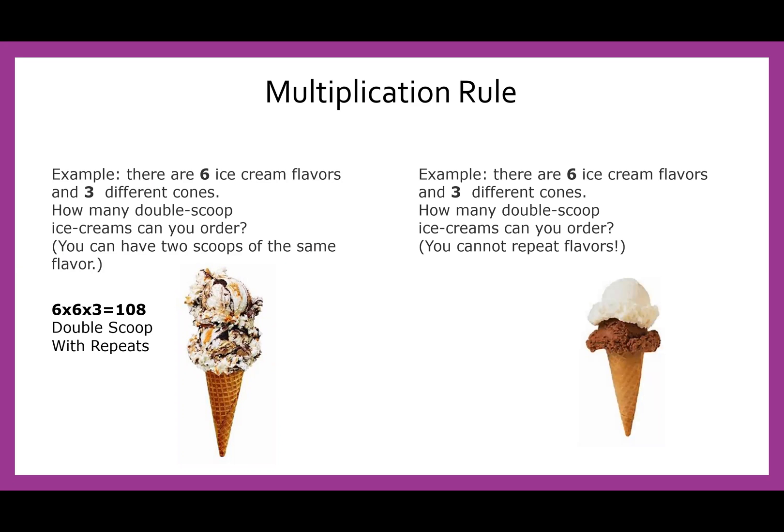Now, if I say, okay, I can do double scoop, but I can't have repeat flavors, what happens is we have six options for the first scoop, but now on the second scoop, we can't duplicate. So now we have only five options for the second flavor. And then we have three for the cones giving us 90 options here.